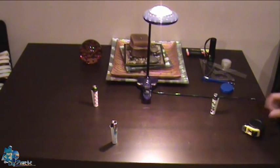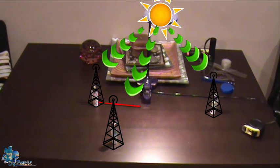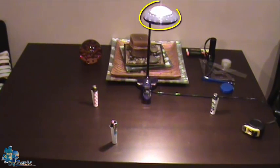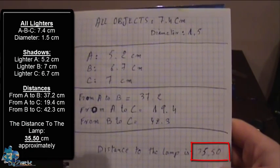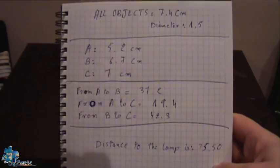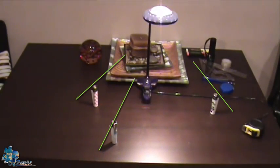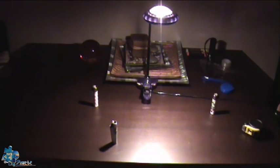Let's imagine the lamp as the sun, the lighters as cell towers, and the light from the lamp as a mobile signal. All we have is distances between the towers and the signal — which is the light in this case. Here are the measurements I used to locate the lamp, which is at 35.50. The question is how we locate the lamp using the distances between the lighters and the elevation angles only. If this works, we'll do the same thing with the sun.